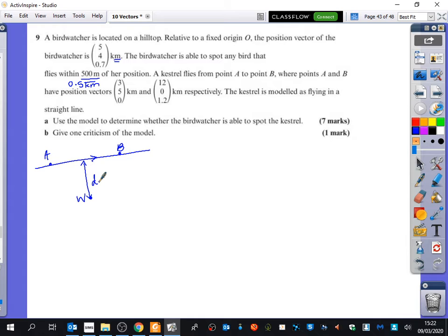I'm going to try and do this quickly because it sounds like you've all done this. So first of all I need to figure out the general point on the line. So I'm going to begin by finding AB which is B minus A which is 12, 0, 1.2 minus 3, 5, 0. So we should get 9 minus 5, 1.2. So the equation of the line is R equals one of the points, 12, 0, 1.2 plus 9 lambda minus 5 lambda and plus 1.2 lambda.